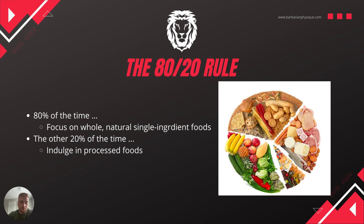I want to introduce the 80/20 rule. As the rule implies, 80% of the time focus mainly on whole, natural, single-ingredient foods. A quick test: whenever you eat your next meal or snack, look at the food and ask how many ingredients are in it. An apple — it's just an apple, no added sugars or processed stuff. A potato has one ingredient. Same with avocados, olive oil, and nut butters — get the 100% natural version. Any source of protein like chicken breast, ground beef, fish, eggs, or egg whites also qualifies.